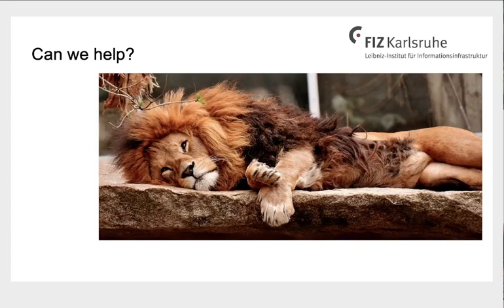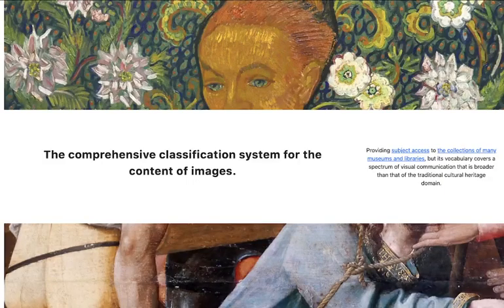Can we speed this up? Can we help the cataloger in doing their description work? Let's have a brief look at how a cataloger would normally use the IconClass system to describe some images.